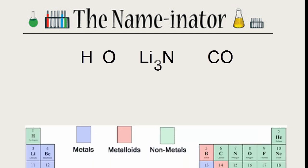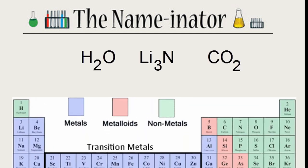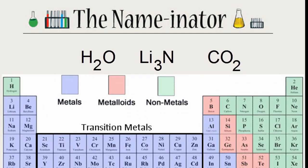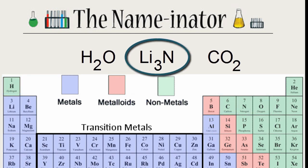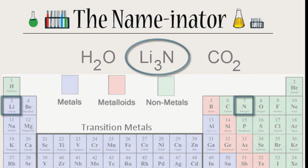Pause for a moment and determine which of the following are binary ionic compounds. H2O consists of a nonmetal and a nonmetal, so it's not ionic, and the same goes for CO2 — we have two nonmetals. The only binary ionic compound is lithium nitride, Li3N.